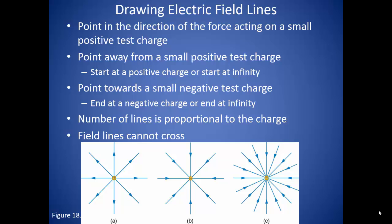The last rule of drawing electric field lines is that the lines cannot cross. This is because the field lines represent the direction of the field. If the lines cross, then that would mean that the field is acting in two different directions.